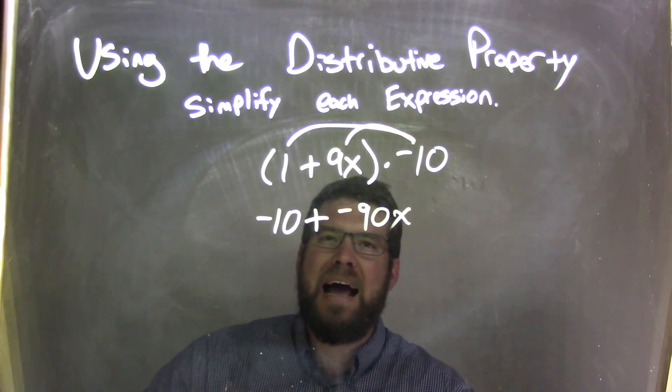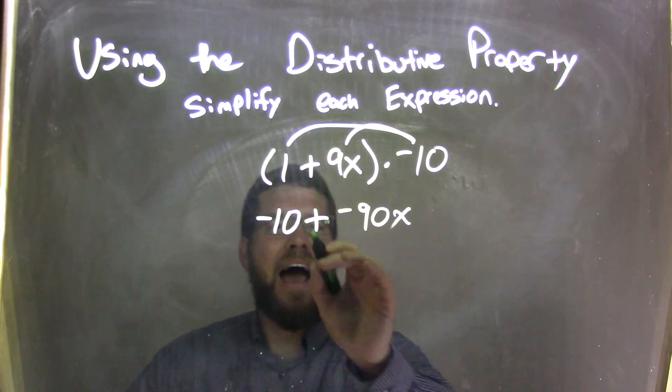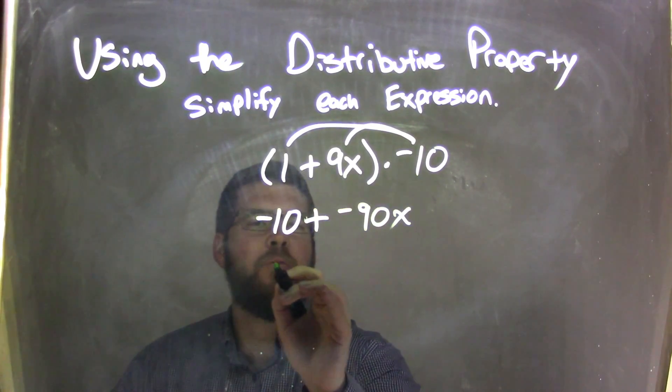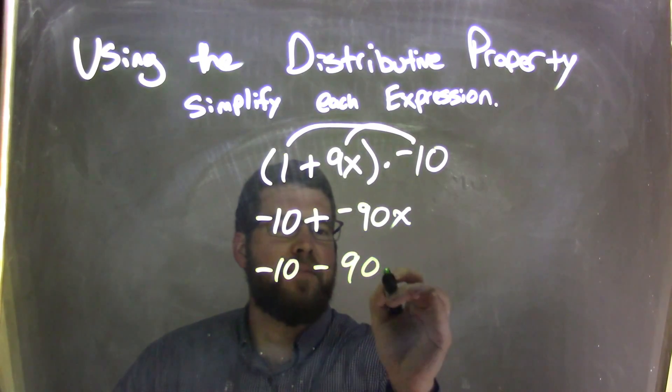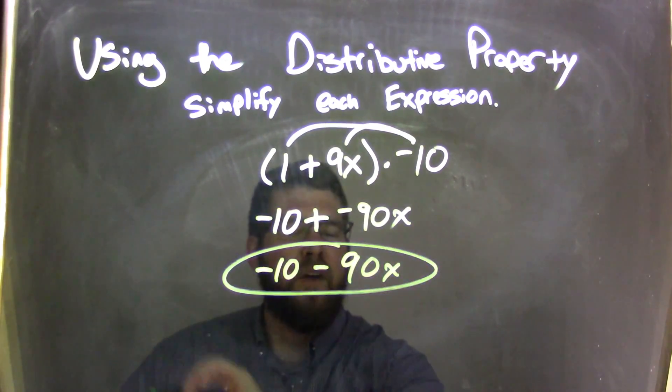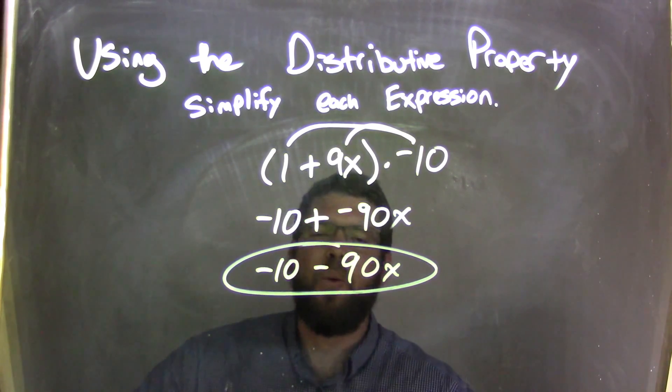But now we want to make this look a little cleaner, right? Because adding a negative, same thing as subtraction. So I'm going to rewrite this to be negative 10 minus 90x. And that is our final answer. They are not like terms. We cannot combine them.